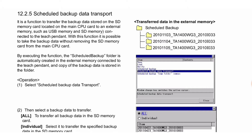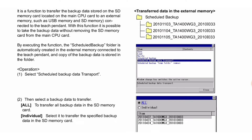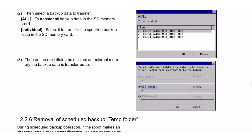Next is Scheduled Backup Data Transport. It is a function to transfer the backup data stored on the SD memory card located on the main CPU card to an external memory such as USB memory or HD memory connected to the teach pendant. With this function it is possible to take the backup data without removing the SD memory card from the main CPU card. By executing the function, the scheduled backup folder is automatically created in the external memory connected to the teach pendant and a copy of the backup data is stored in the folder. Operation: first, select Scheduled Backup Data Transport; second, select a backup data to transfer — 'all' to transfer all backup data in the SD memory card, or 'individual' to transfer specified backup data; third, on the next dialog box select an external memory the backup data is to be transferred to.